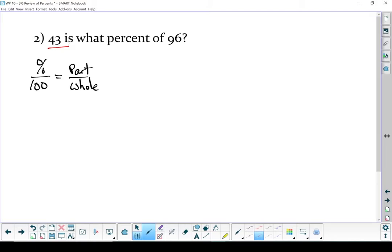There's 43. That's the part. 96 is the whole. Because 43 is a part of 96. And in this case, I'm trying to solve for what is the percent. Let's put our numbers into our formula. We're always over 100. My part is 43. My whole is 96. And I'm trying to solve for the percent.